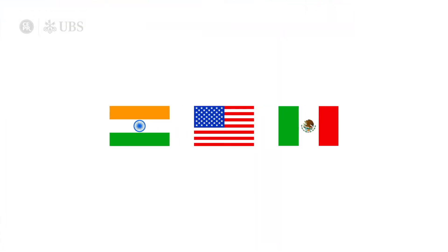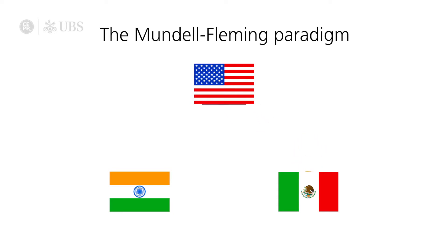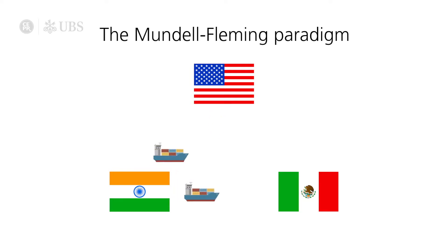Let's take three countries — India, the U.S., and Mexico. Under the Mundell-Fleming paradigm, the assumption is that when Mexico sells to India, it sells everything in Mexican peso terms. When it sells to the U.S., it sells in Mexican peso terms. When the U.S. sells to India or Mexico, it sells in dollar terms. When India sells to Mexico or the U.S., it sells in rupee terms. But if you do a simple test and look around the world, that's not the case. Almost everything India exports is priced in dollars. Almost everything Mexico sells to the rest of the world tends to be priced in dollars.